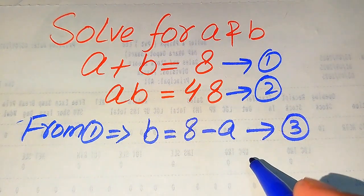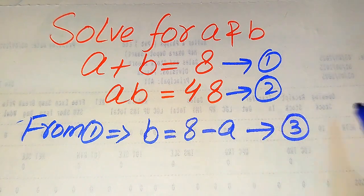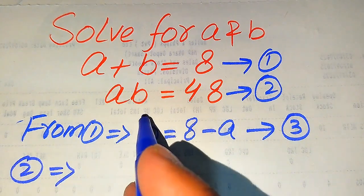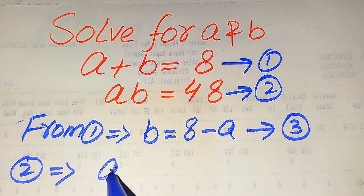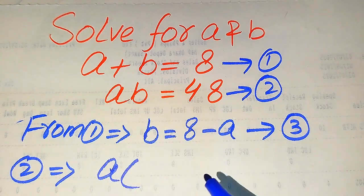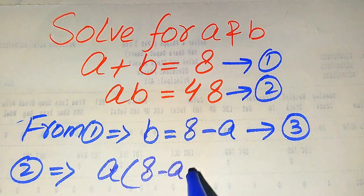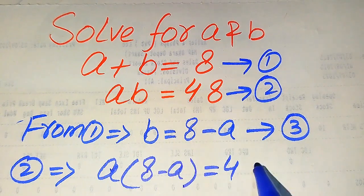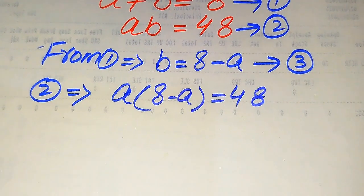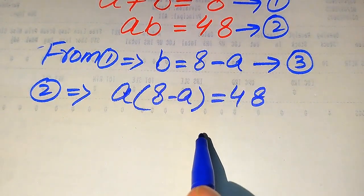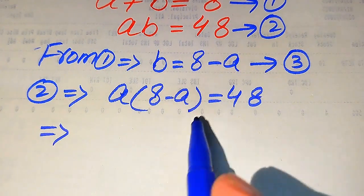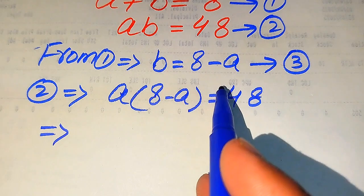Now we use this value of b from equation three and substitute it into equation number two. So equation number two implies that a times b becomes a times (8 minus a), which equals 48. We have now converted our equation into a single variable term, that is a. We will first find the values of a, then substitute those into equation number three to get the values of b.